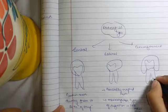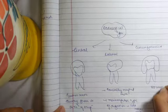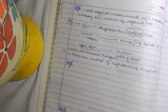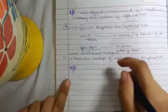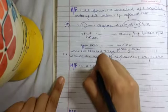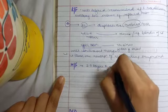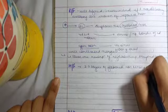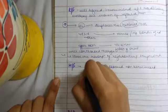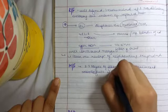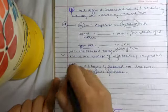Let's discuss the histopathology. In histopathology, first of all, since there is reduced enamel epithelium, you will see two to three layers of flattened, non-keratinized odontogenic epithelium.